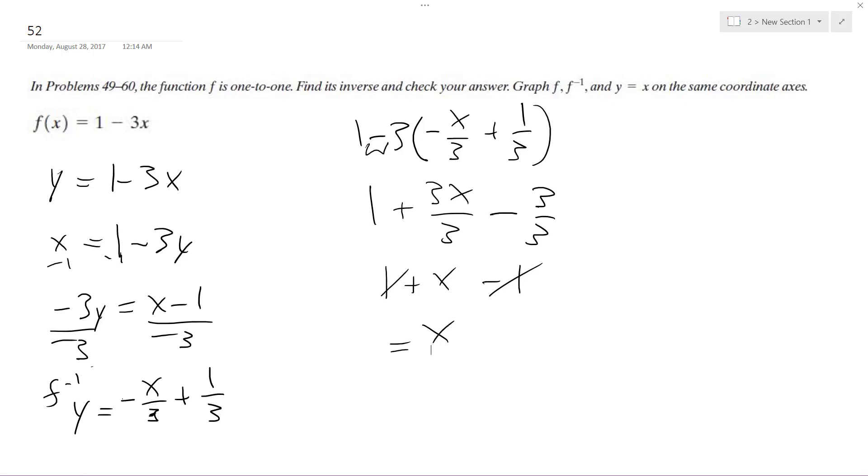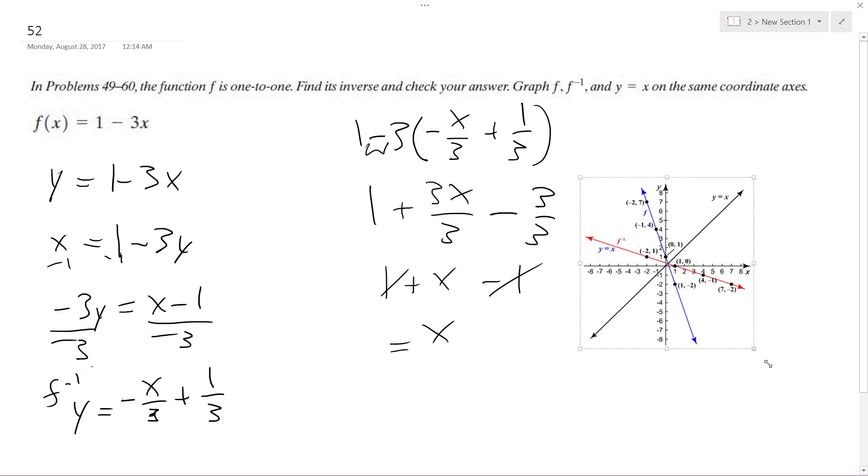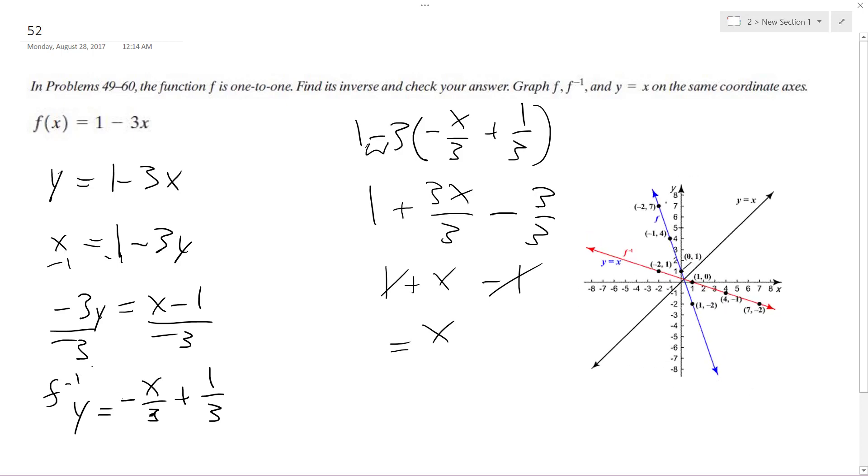And the graph for this looks approximately like this. So our standard graph of 1 minus 3x is the blue, and our inverse is the red, negative x over 3 plus 1 third.